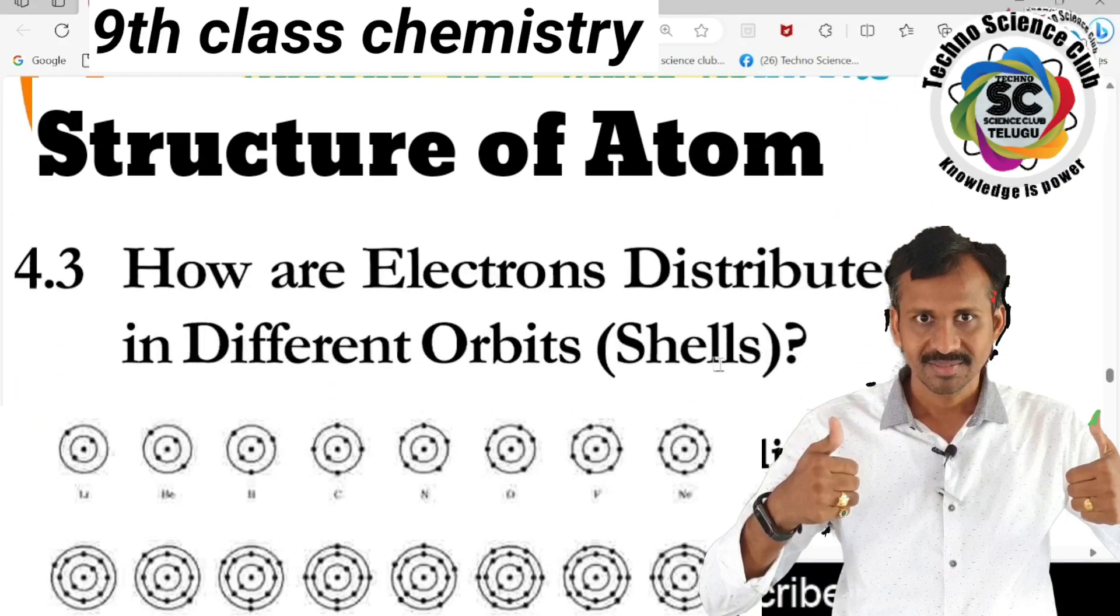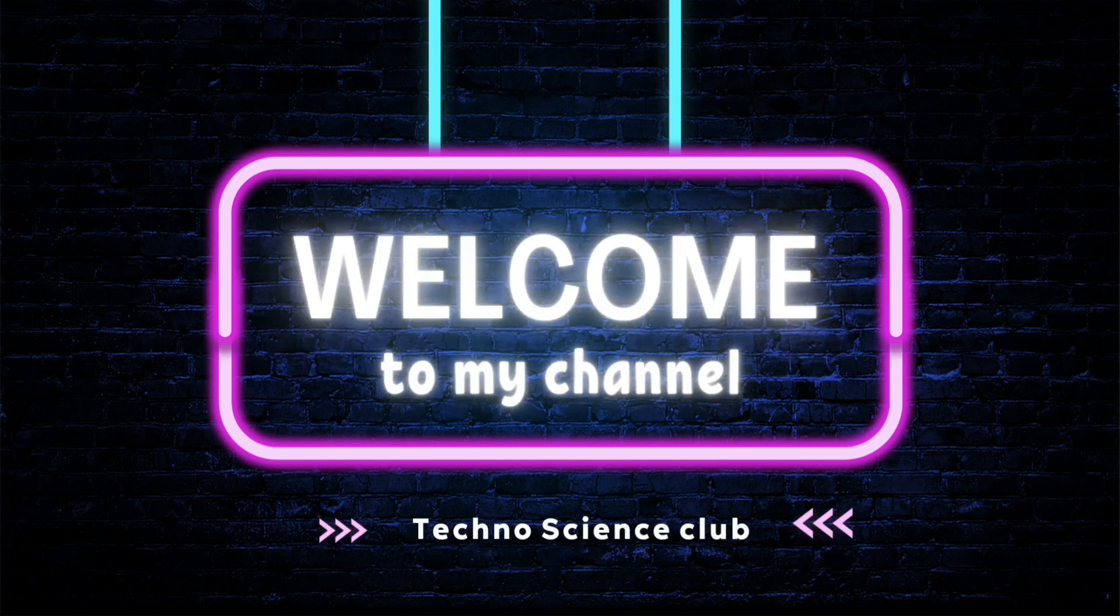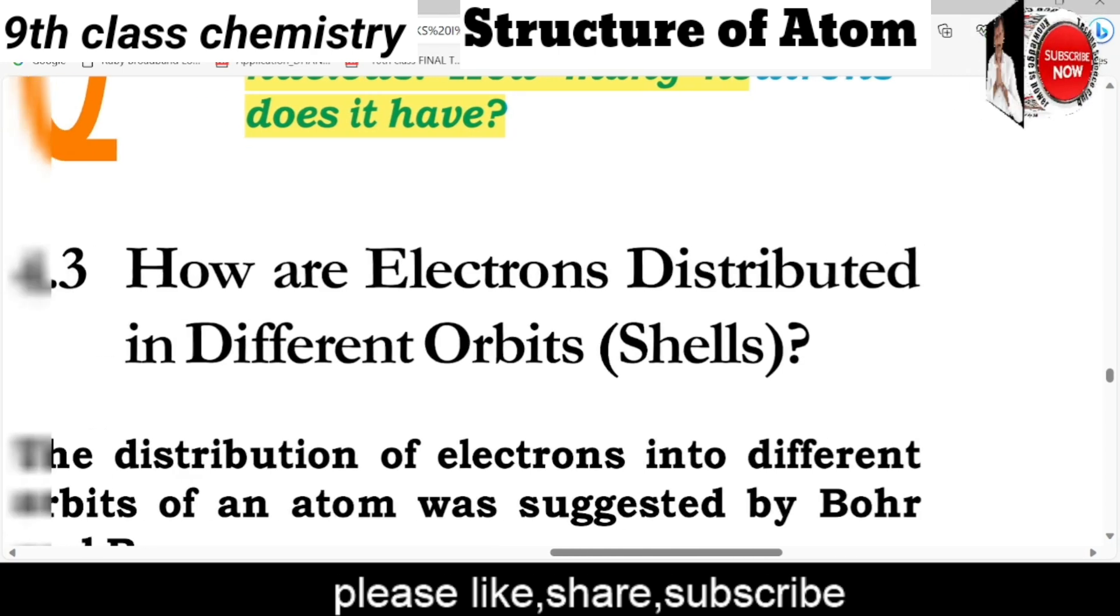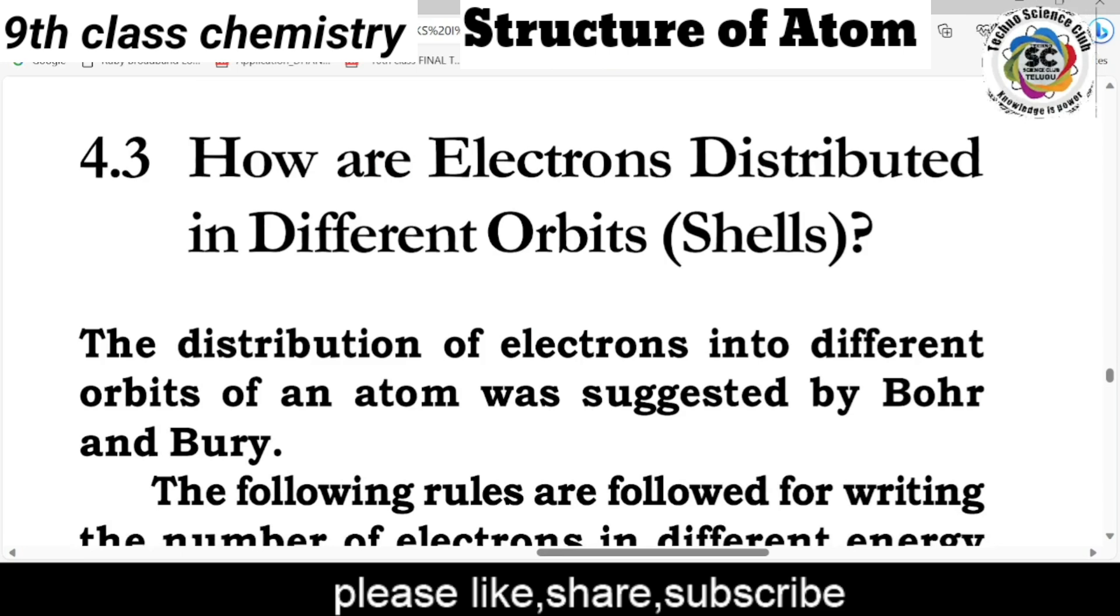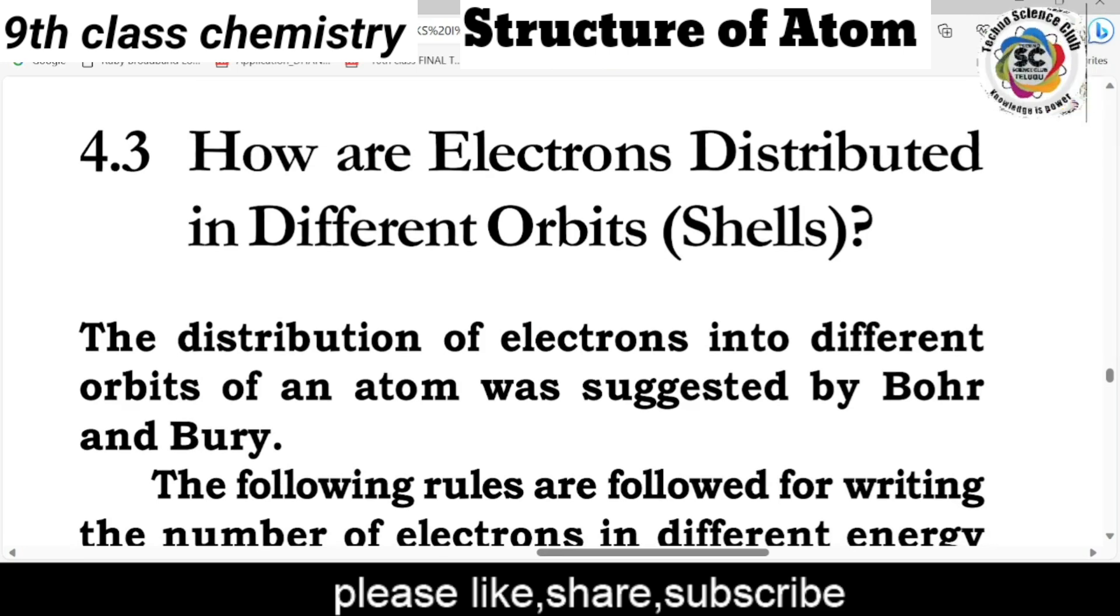Hello friends, welcome to Techno Science Club. Today we'll discuss how electrons are distributed in different orbits or shells. For example, in an atom with 12 electrons, the atomic number is 12, like magnesium.